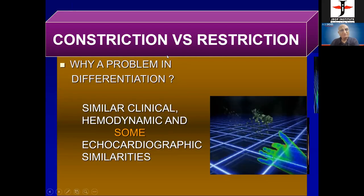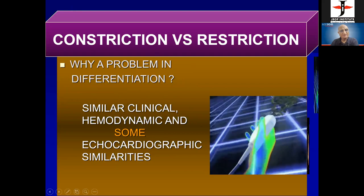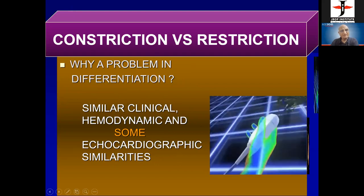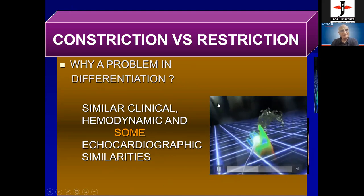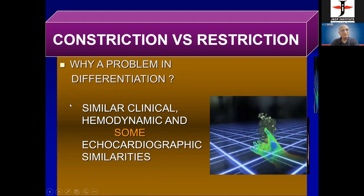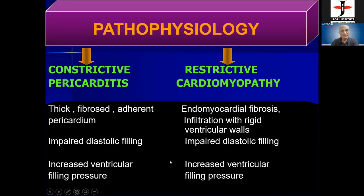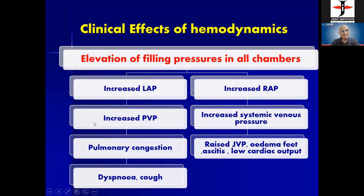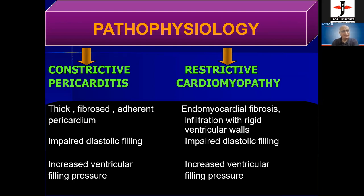The problem in differentiation is that many cases show similar clinical, hemodynamic, and echocardiographic findings. In constrictive pericarditis, there is a very thick, fibrosed, adherent, non-compliant pericardium that does not relax or expand well, leading to increased diastolic filling pressure. Think of a new balloon — you need more pressure to fill it. When you have a problem filling any chamber, you increase the filling pressure.